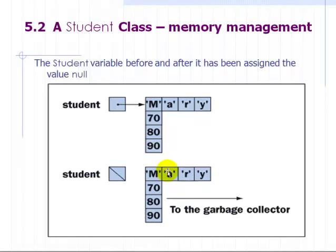This is a student object all nice and packaged up. Has no reference to it because we've assigned null to student. The garbage collector goes along, sees an unreferenced object, throws that away, and then the memory can be claimed for something else.